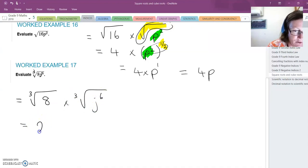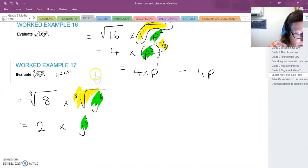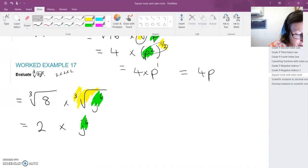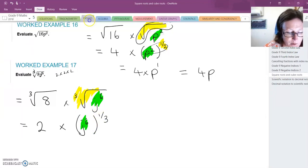I know the cube root of 8 is 2 because 2 times 2 times 2 gives me 8. With my j to the power of 6, I'm going to write down my j to the power of 6, but I'm not going to write down my cube root. We saw above that the cube root is the same as saying the power of a third, so instead of writing my cube root, I've written the power of a third.